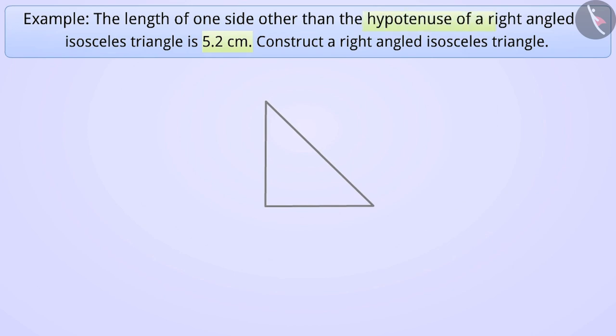Like, we have to construct a right-angled isosceles triangle. From right-angle, we infer that the triangle has a right-angle that is an angle of 90 degree. And from isosceles, we infer that in this triangle, two sides other than the hypotenuse are equal.